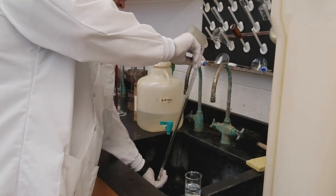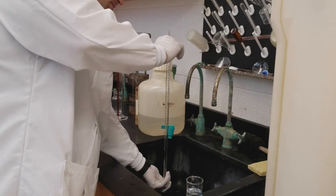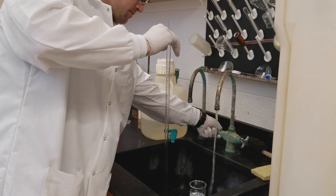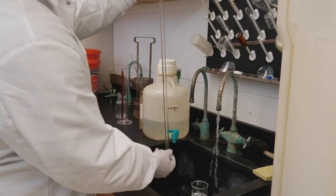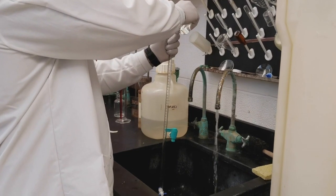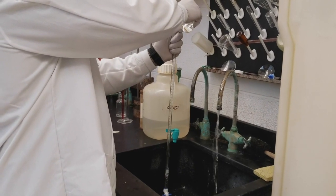Then you can just dump it down the sink with lots and lots of water. We're just going to flush it. Then you're going to repeat this process three times, so about another 15 milliliters of your dilute acid solution.